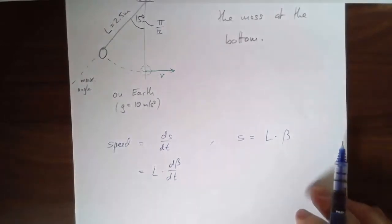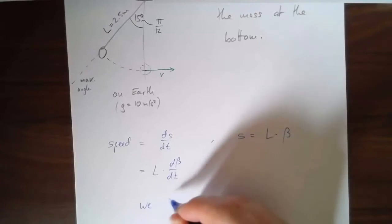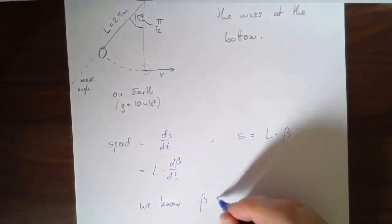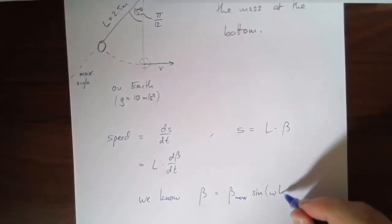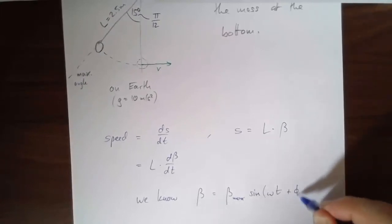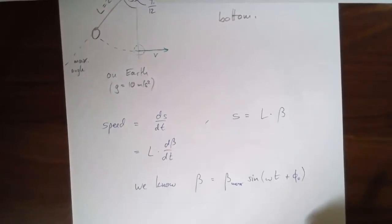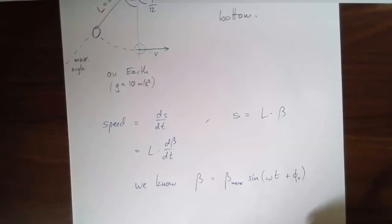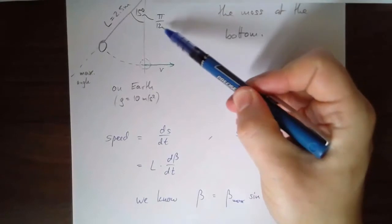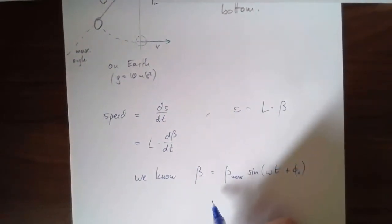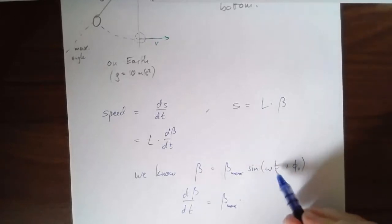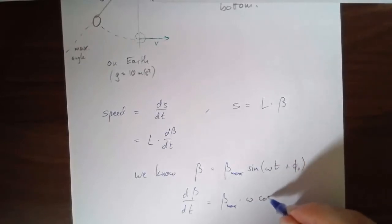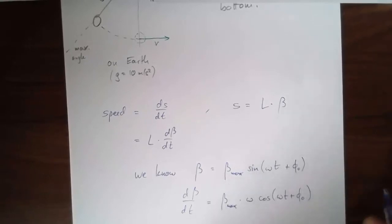So l times db dt. Now, what is, sorry, db dt. What is db dt? Well, we know what beta is. We worked it out before. Beta is some maximum angle times the sine of omega t. Should I include the phase constant? It doesn't really make a difference, but I'm going to include it just for completeness. So we know this. Now, in our case, we know the value of beta max. Explicitly we're told it's pi over 12. So I'm going to be able to plug that in, but first I'm going to take the time derivative. Beta dt is equal to beta max times, so sine goes to cosine and the thing multiplying the variable comes out front. Omega cosine, omega t plus phi naught.